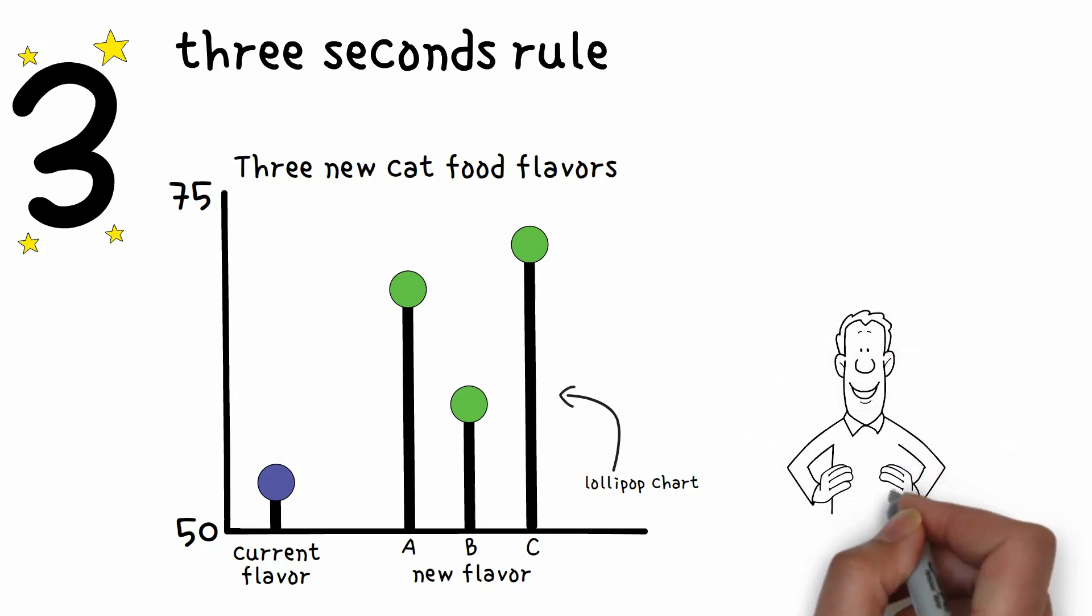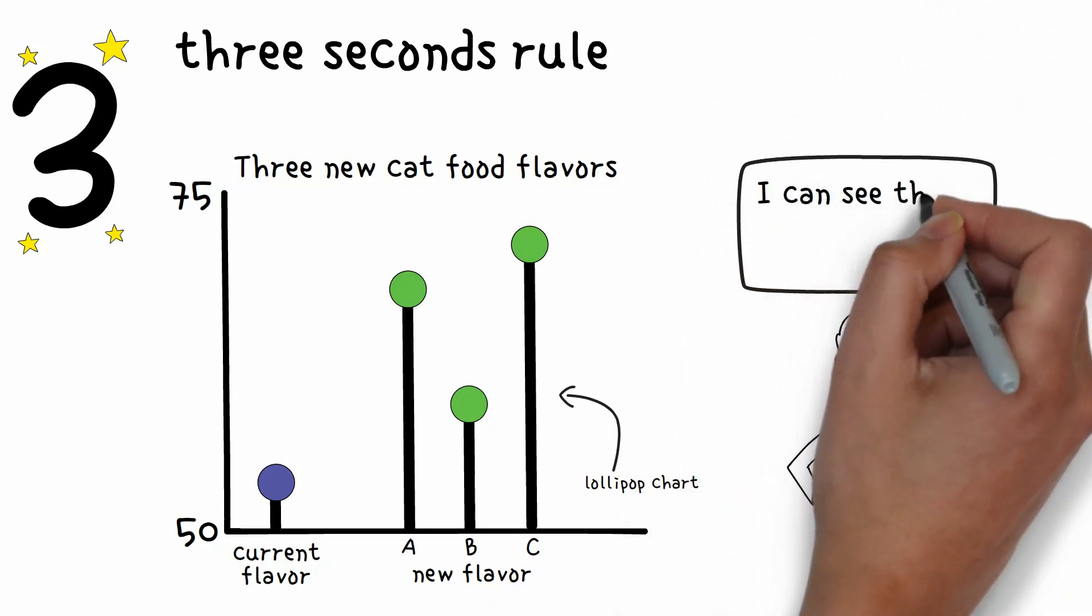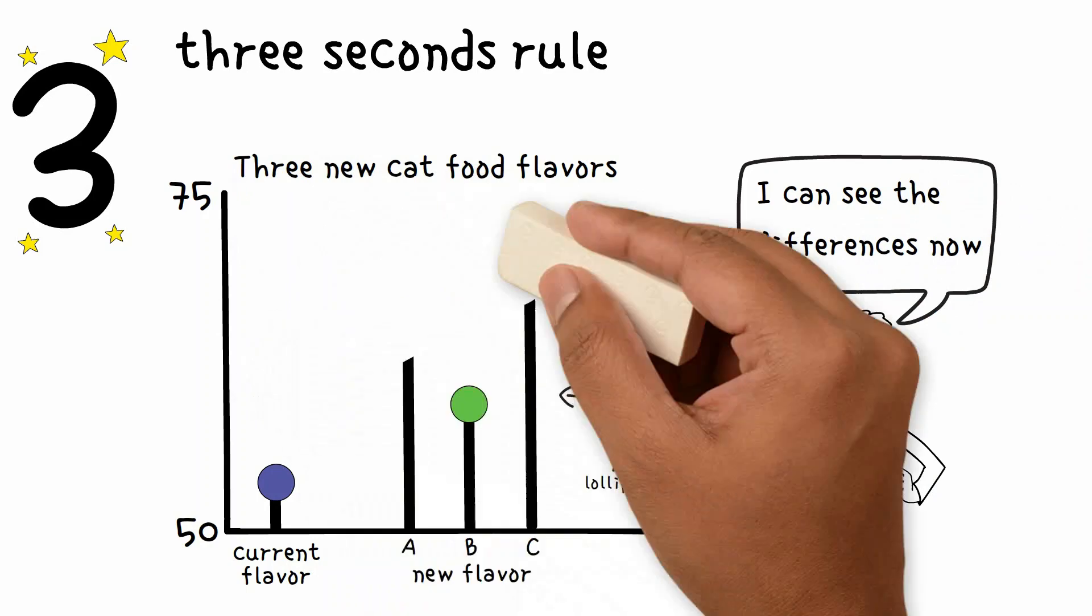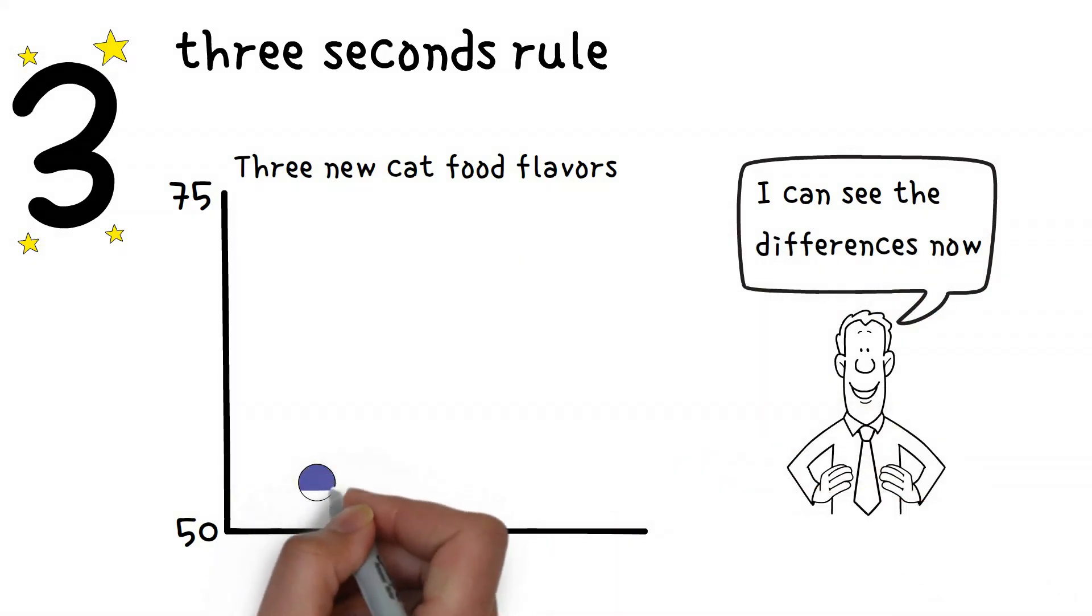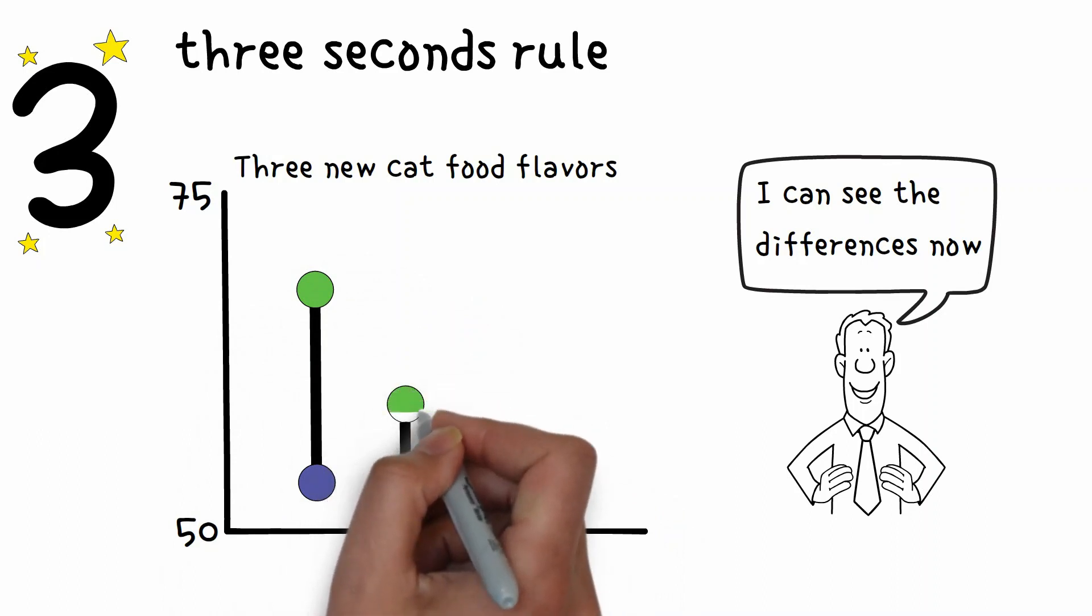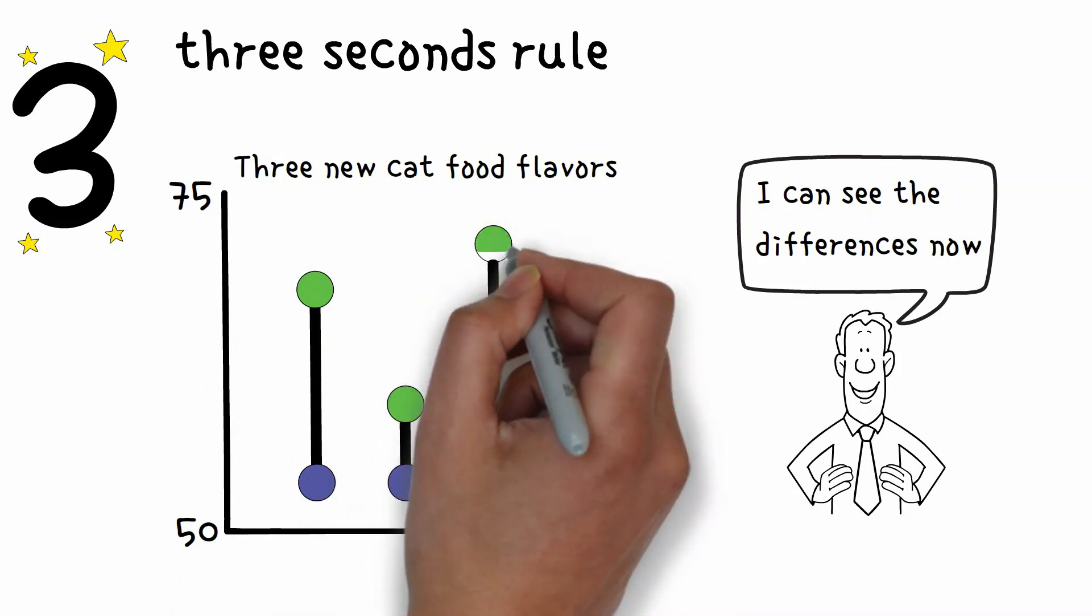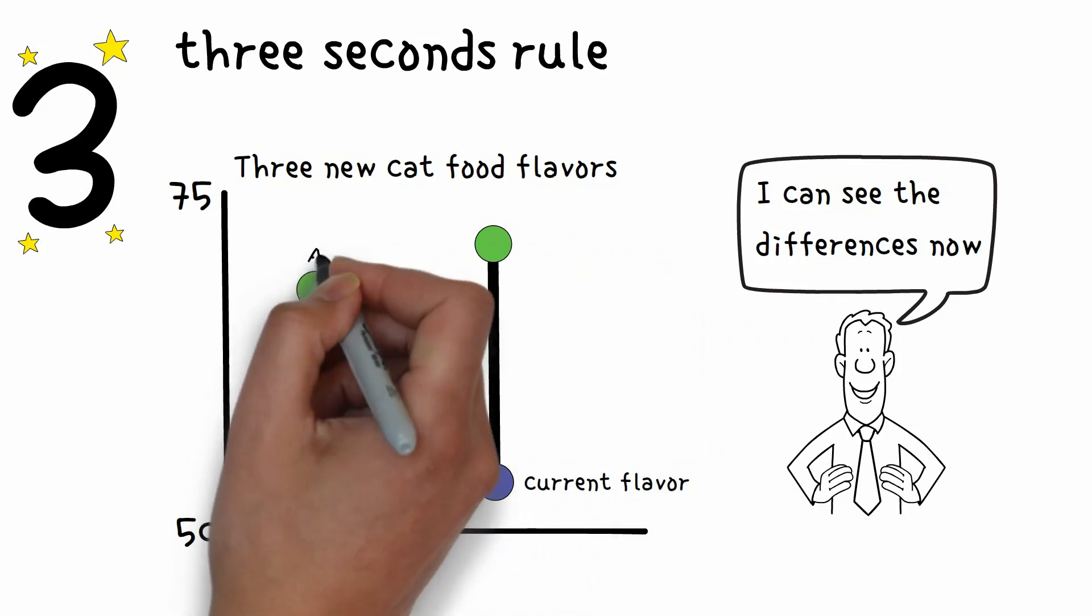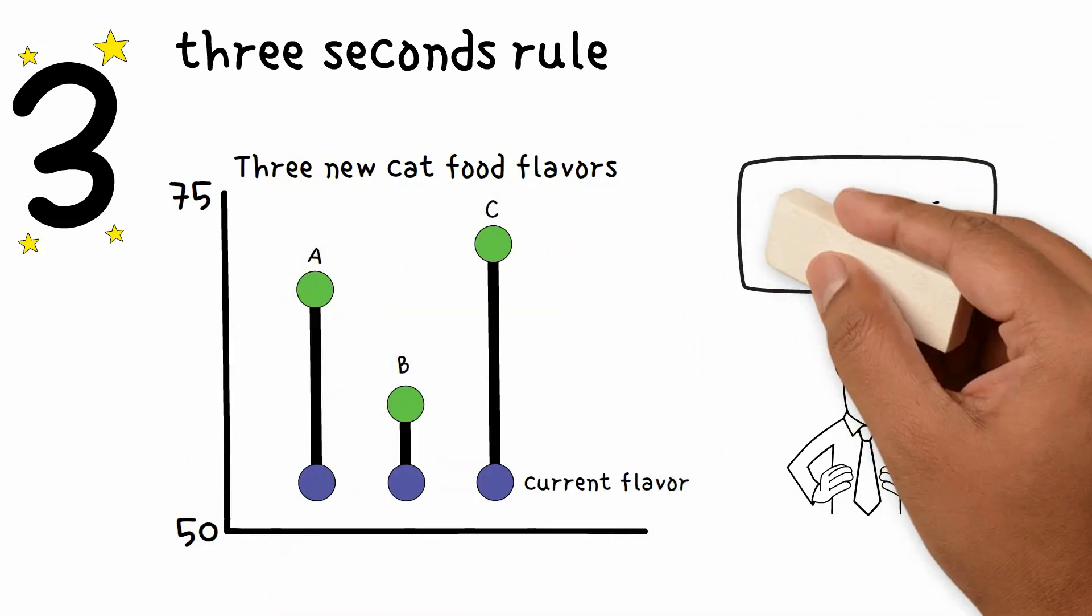But what if you could simplify your visualization even further using a dumbbell plot and incorporate the current process point as the base for each of the solution visualizations? Now a quick three second glance will show your audience that solution C offers the biggest improvement.